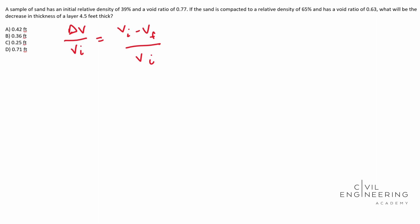I get it. Okay. It's kind of confusing starting out, but we'll get ahold of it here in a minute. So our volume initial is going to be our volume when we're at 39% relative density, our volume final is going to be when we're at 65% relative density.